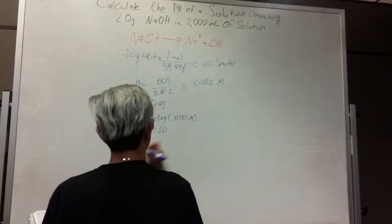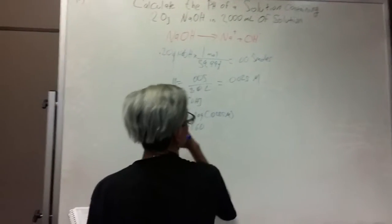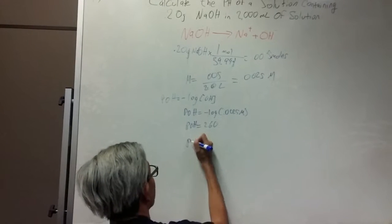Now you want pH, so you're going to subtract your pOH from 14 to get pH.